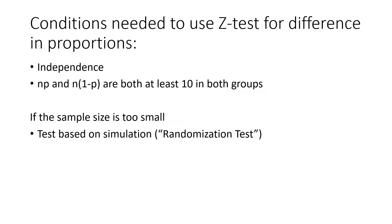If the sample size is too small, we're going to be able to use a test based on simulation. This is going to be very similar to the idea that we saw in the video for a single proportion. And when we do it this way, this is usually referred to as a randomization test for difference in proportions, and that's what you'll see in the textbook.